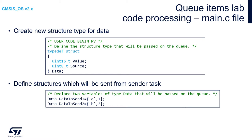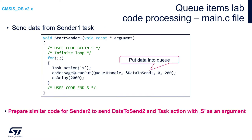In main.c we need to define the data structure. I propose to keep one 16-bit variable called 'value' and one 8-bit variable called 'source'. Then we will define two variables of data type to be used by the sender tasks: 'dataToSend1' with value set to A and source set to 1, managed by sender 1; and 'dataToSend2' with value set to B and source set to 2, managed by sender 2. Remember to define all of these within user code sections before the main function.